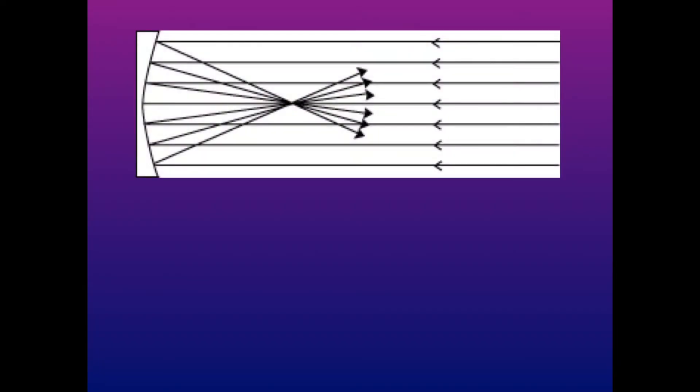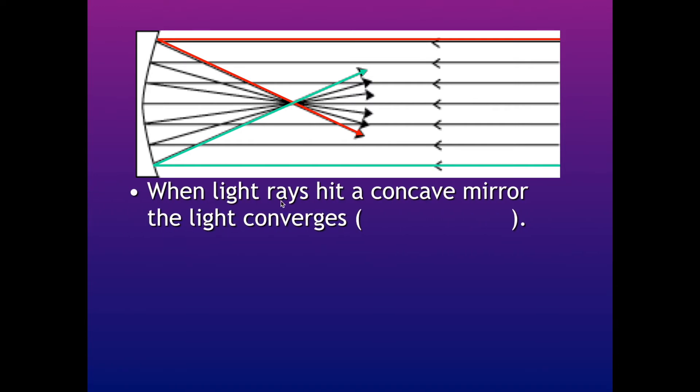Here's what happens. If this is our mirror here, if you look at where the mouse pointer is, if the light rays shine from above or below, they end up crossing each other. And what we say is that the light rays converge at this point here. And that's actually called the focal point. It says when light rays hit a concave mirror, the light rays converge, which means that they come together.